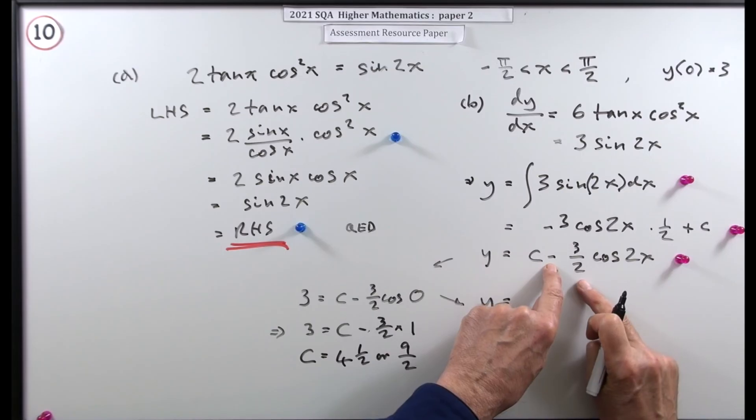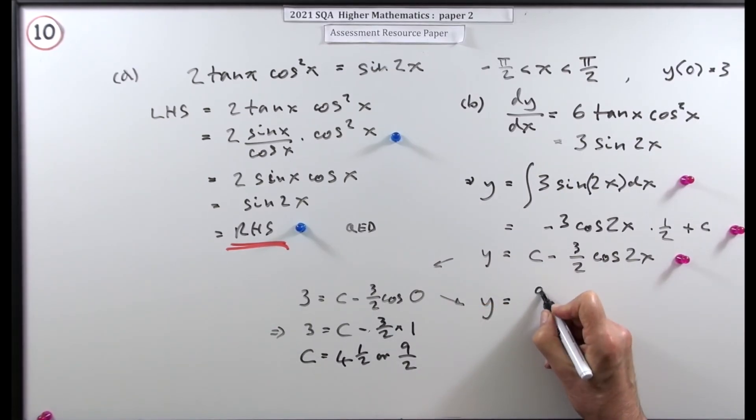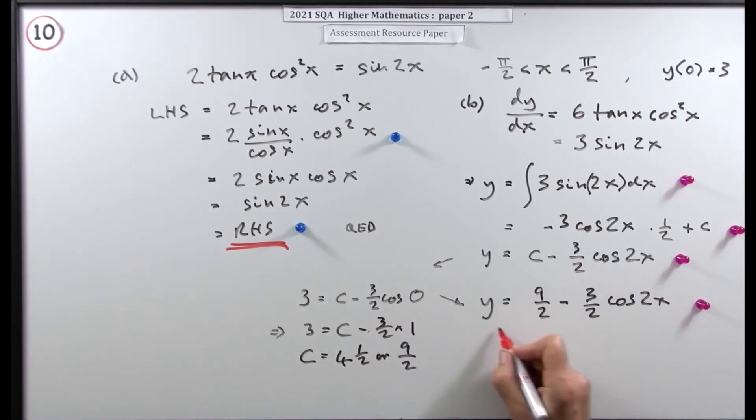Now you could just have left it as negative 3 upon 2 cos 2x and then put that, I think it looks nicer to put 9 upon 2 then minus the 3 upon 2 cos 2x. And there's the last mark.